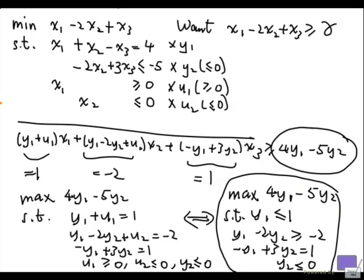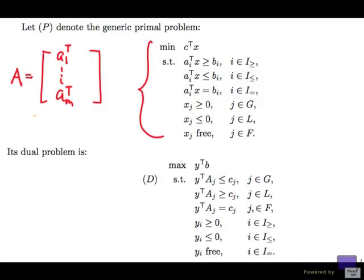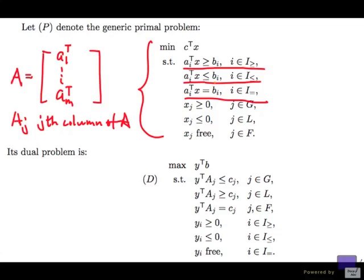And now, let's look at the definition of the dual problem in general. So, the problem that we are looking at is this. This is called P. And let me explain the notation here. A is an M by N matrix, where the rows are denoted by A1 transpose up to AN transpose. And AJ is the Jth column of A. And B is a vector, of course, with M components. So what it is saying is, I have here three different kinds of constraints: those that are greater than or equal to, those that are less than or equal to, and those that are equal.